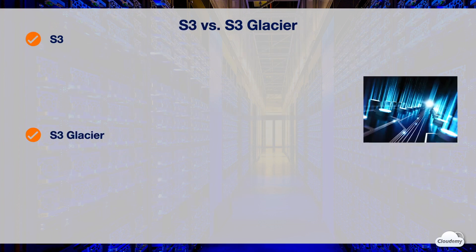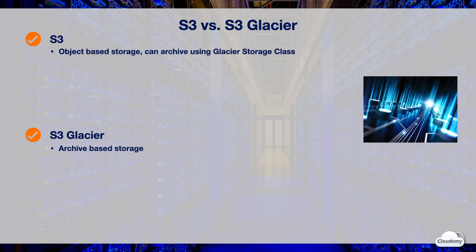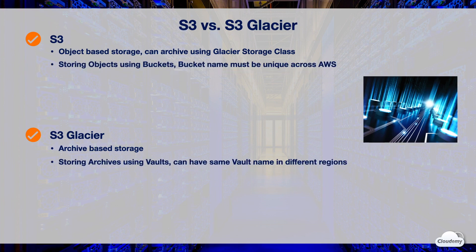Both S3 and S3 Glacier are secure and scalable AWS storage services. S3 is object storage — it stores data that requires frequent and immediate access, and it offers different storage classes to suit your access patterns. As a complement, you can also archive objects directly in S3 using Glacier and Glacier Deep Archive storage classes.